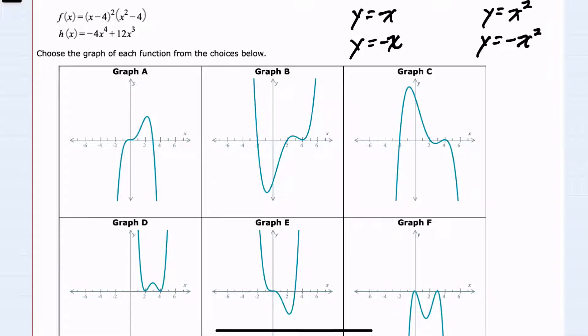I'll start by looking at the end behavior. To determine the end behavior, I like to look at some basic functions, such as y equals x. This is where the leading coefficient is positive and the degree is odd. Y equals x is just a line going down to the left and up to the right. From that, I know that other functions that have a positive leading coefficient and an odd degree will have that same end behavior.